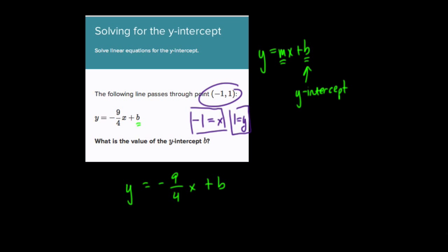So instead of writing y, we could write 1, because y equals 1. And instead of writing x here, we could write negative 1. So we write this, negative 9 over 4 times negative 1 plus b. So now we only have one variable. Two negatives here multiplied to a positive. So what do we have? I'll write up here. We have 1 equals positive 9 fourths plus b.